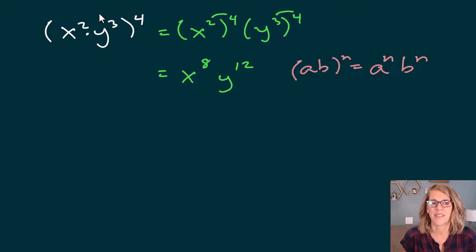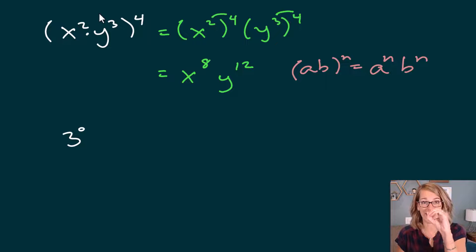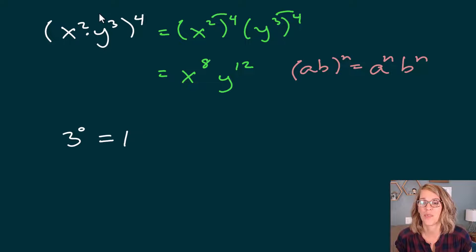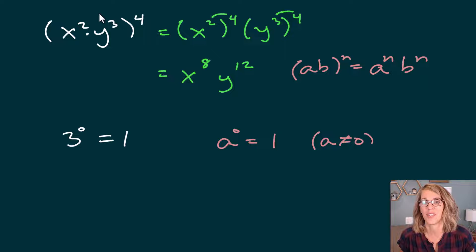What if we had a power of zero? Three to the zero power — anything to the zero power, except for zero, is equal to one. So again, anything to the zero power, except for zero, is equal to one.